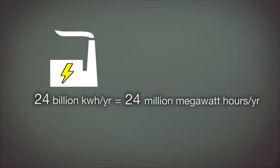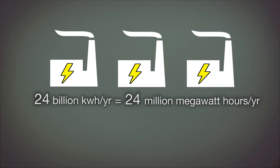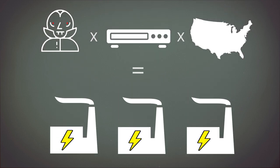24 billion kilowatt hours is the same as 24 million megawatt hours, which is the amount of electricity three 1,000 megawatt power plants generate in a year. Phantom loads from cable boxes in the U.S. require three power plants running 24-7.